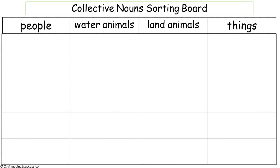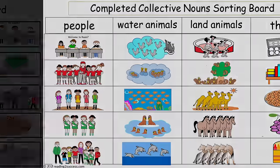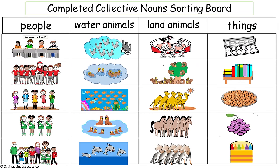Our last activity is a sorting activity. Kids are going to sort collective nouns according to people, water animals, land animals, or things. This is the sorting board for the activity, along with the collective noun pictures. This is the completed example. If you found this video helpful, please subscribe, and I will leave the link for all the teaching templates in the description section.